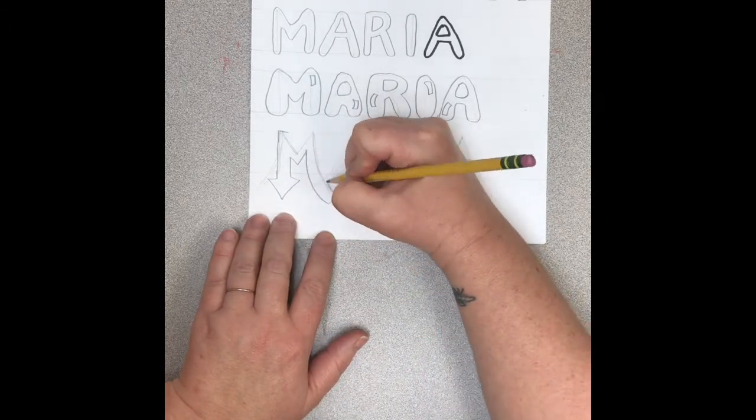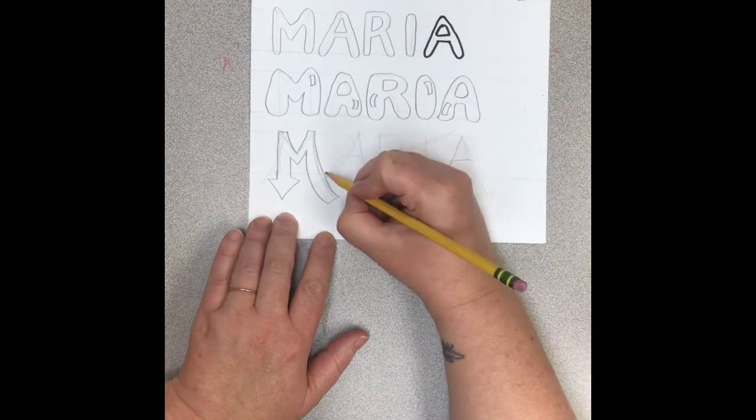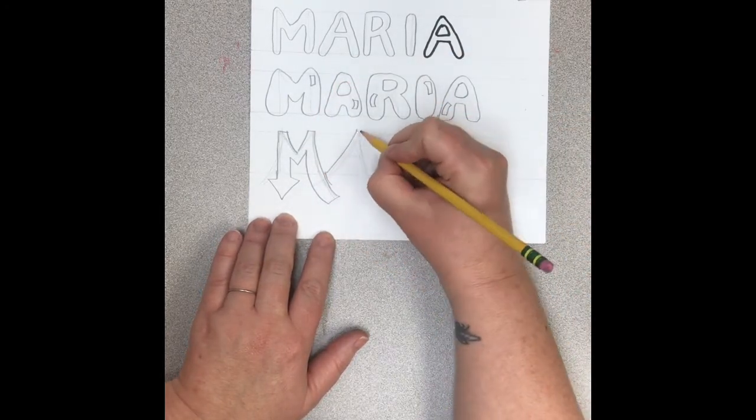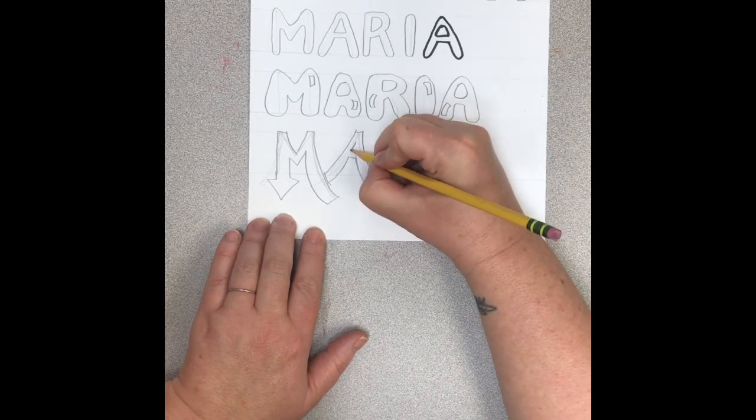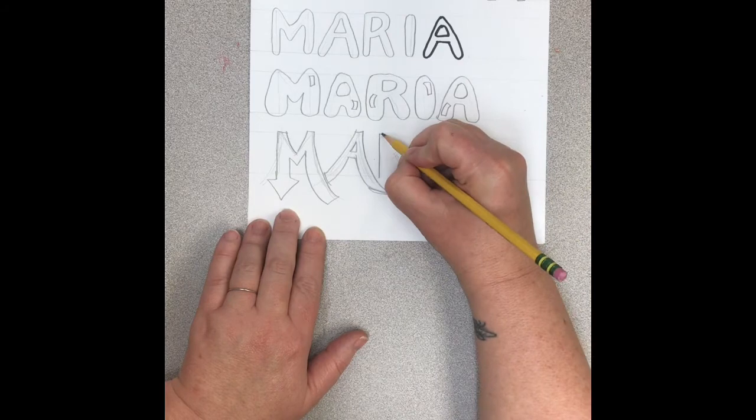A lot of graffiti letters have angles and curves and arrows. So again I'm just making choices about where to put a curve, where to put an angle and where to put an arrow.